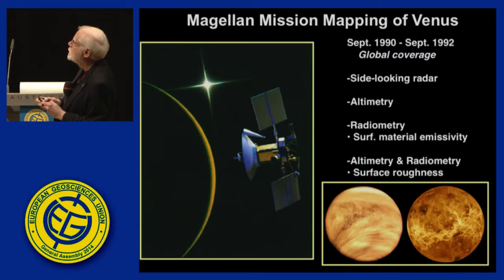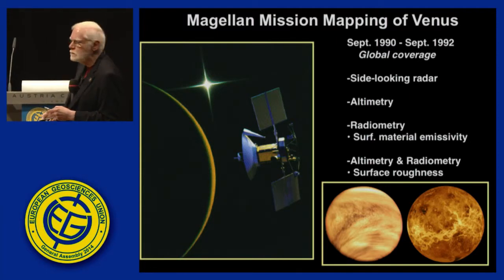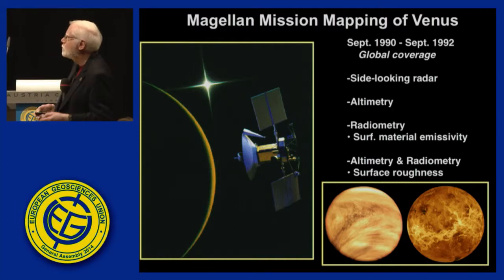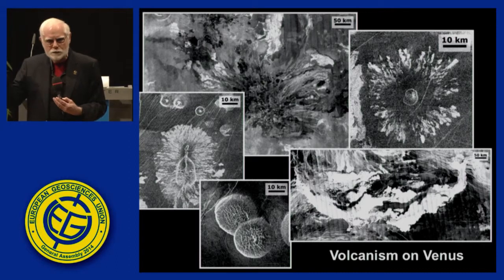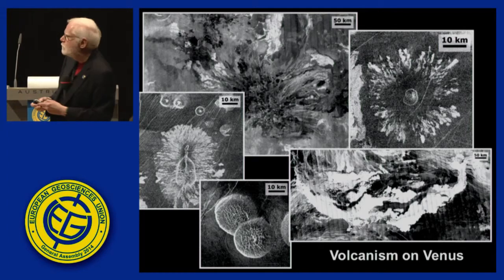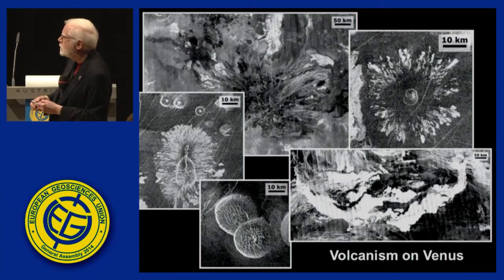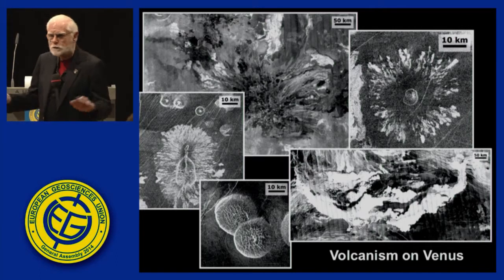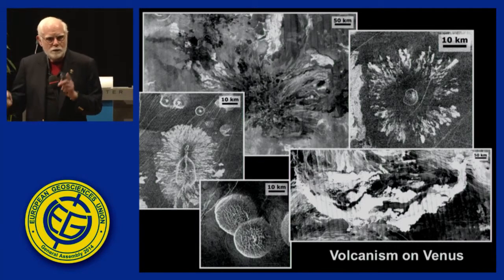Magellan was a beautiful mission with global coverage — side-looking radar, altimetry, radiometry, and gravity structure. It was just incredible to watch Venus unroll orbit by orbit. Volcanism dominates Venus — 80% of the surface is dominated by volcanism. There are steep-sided domes like those on the Moon, possibly representing differentiation and silicic domes, ranging to huge lava flows. What you don't see here are many impact craters — our first clue. Maybe Venus is young like the Earth.